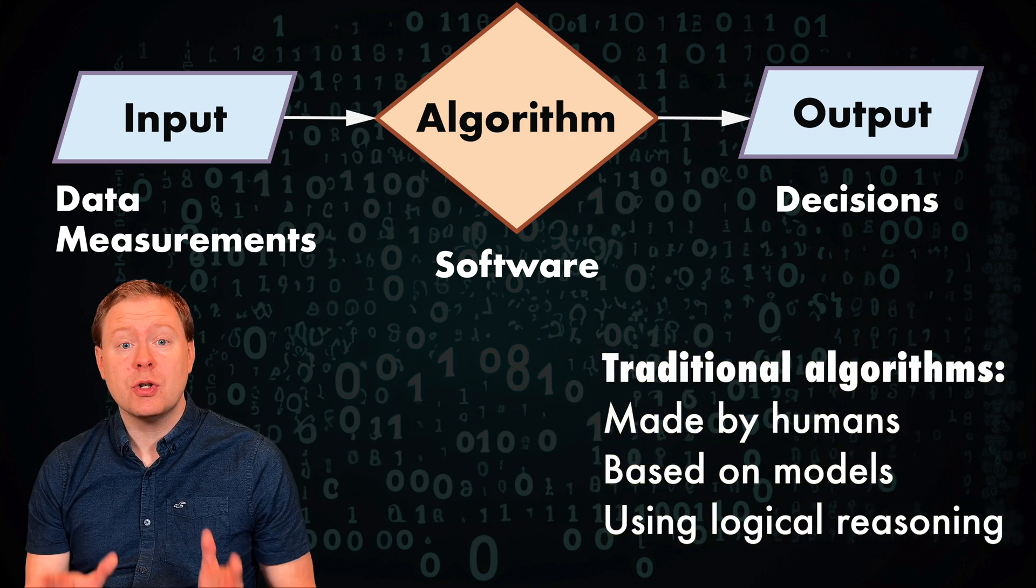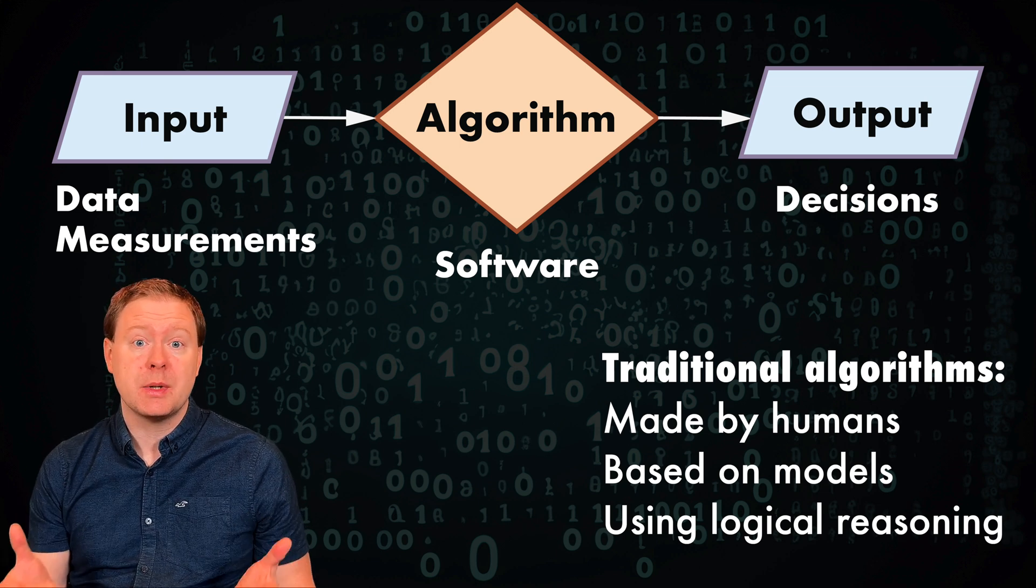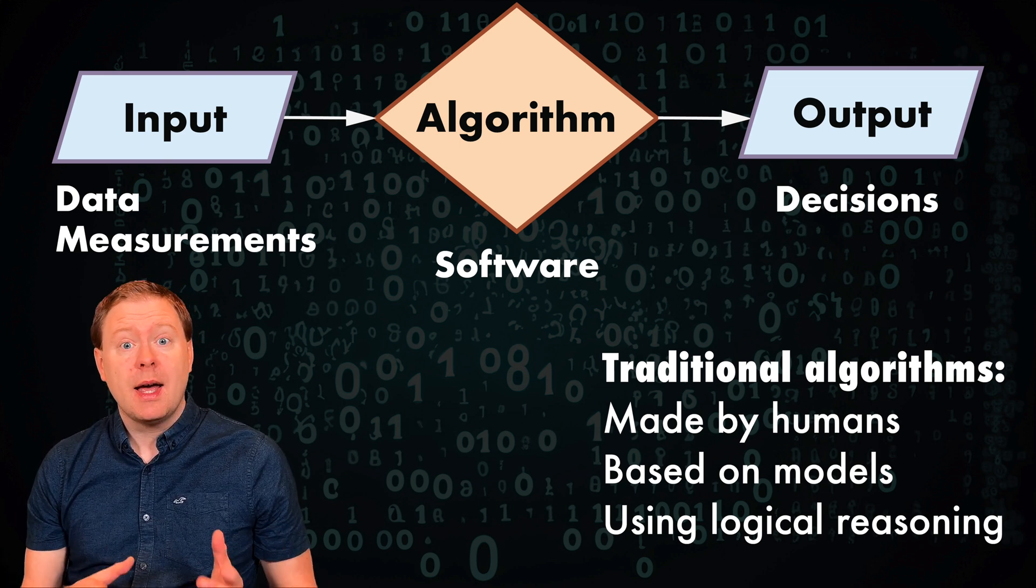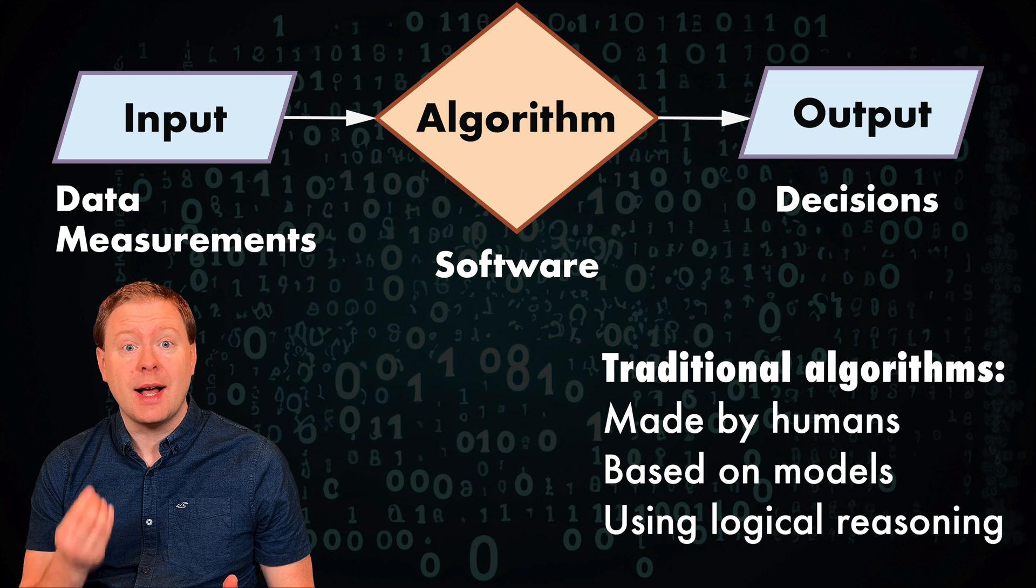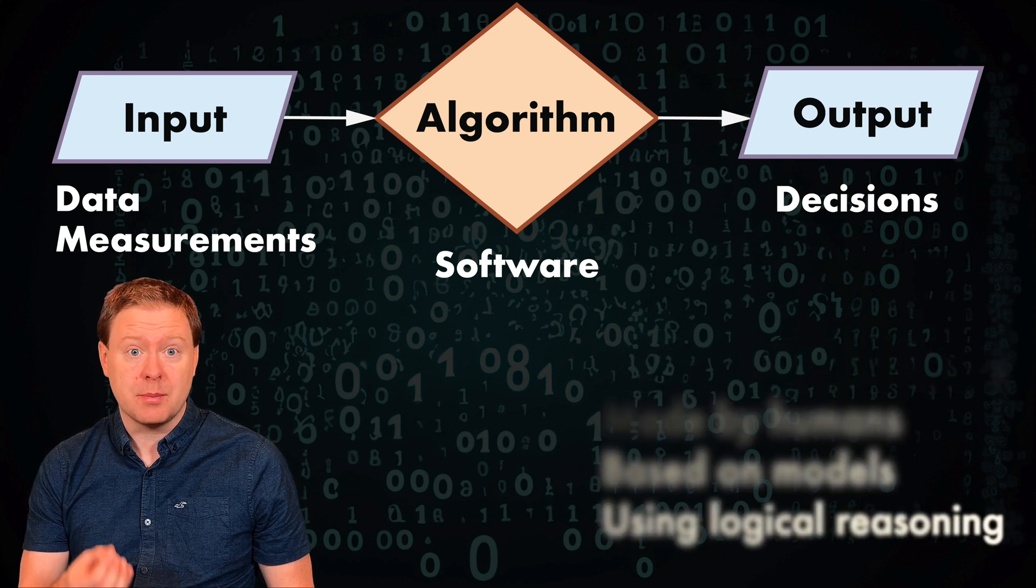Traditional algorithms are made by humans. We make models of the physics behind the data that we use as input to the algorithm, and then we try to handcraft algorithms that can come to the right preferred decisions based on that input data.